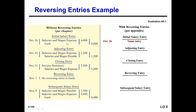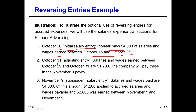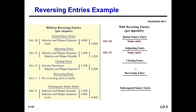Salaries and wages expense is debited and cash credited for $4,700. Then on October 31, the adjusting entry covers salaries and wages earned between October 29 and October 30 — $1,200 — which the company will pay on November 9. This amount is earned but not yet paid in October; it will be paid in November. We record salaries and wages expense and salaries and wages payable.